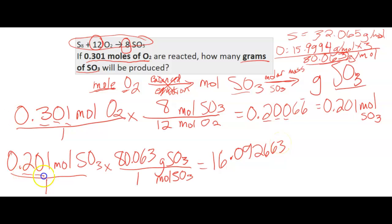I've got three significant figures here. I have 2, 3, 4, 5 here. I always go with the least significant figures when I'm talking about multiplication or division. So I have three significant figures, 1, 2, 3. So that's going to give me 16.1 grams of SO3.